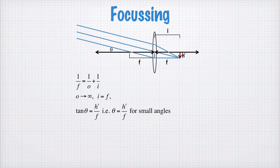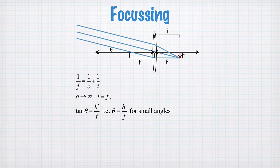I want to have a quick look now at two limits of lens behavior. These are focusing and collimating.